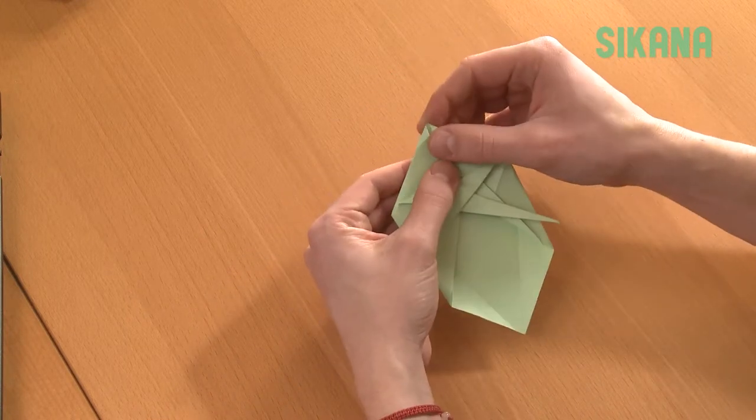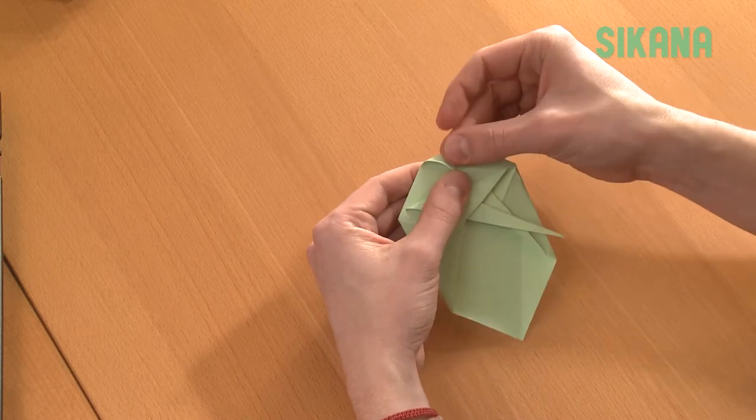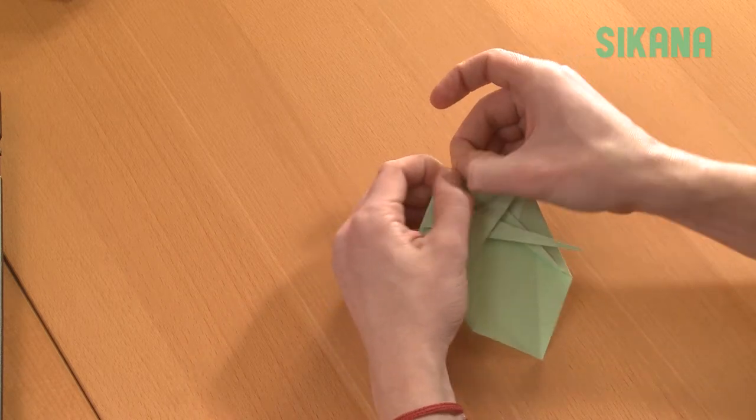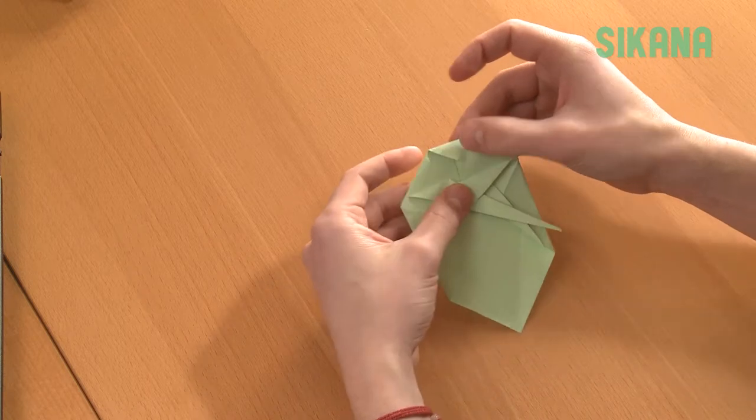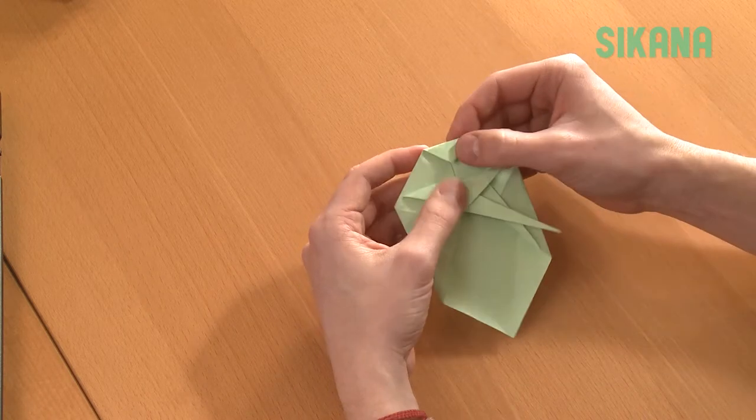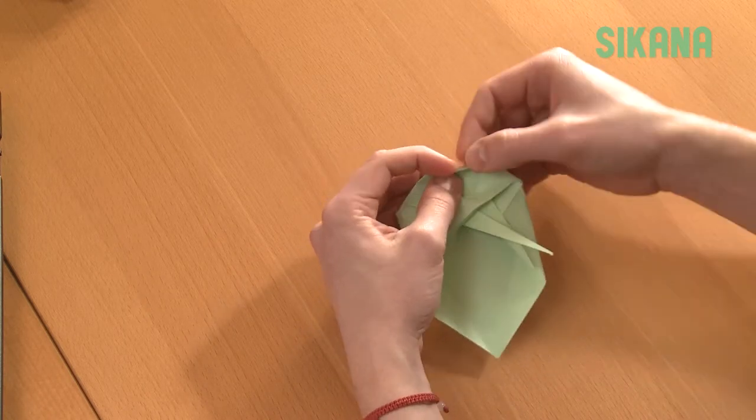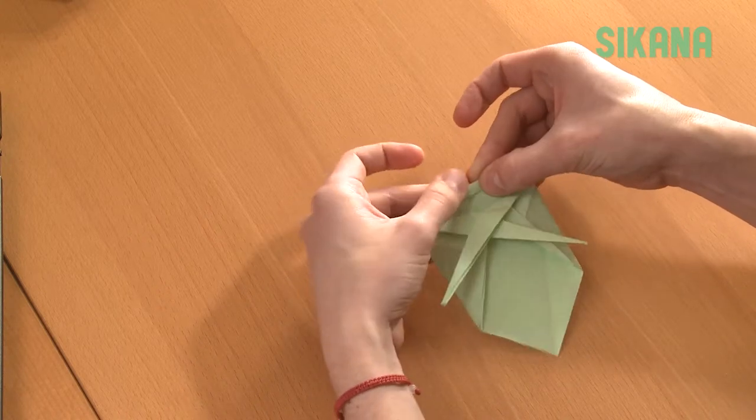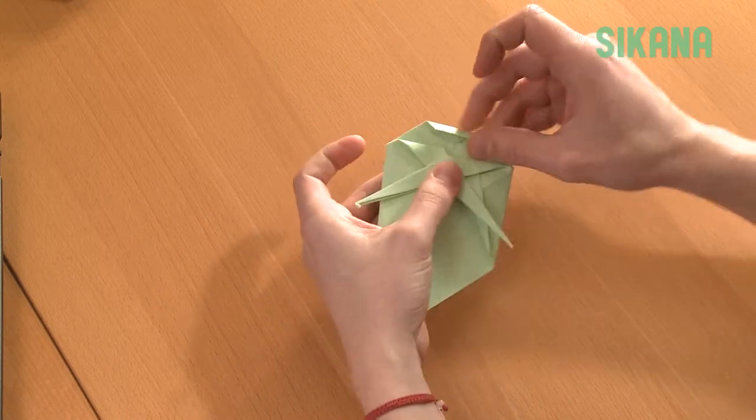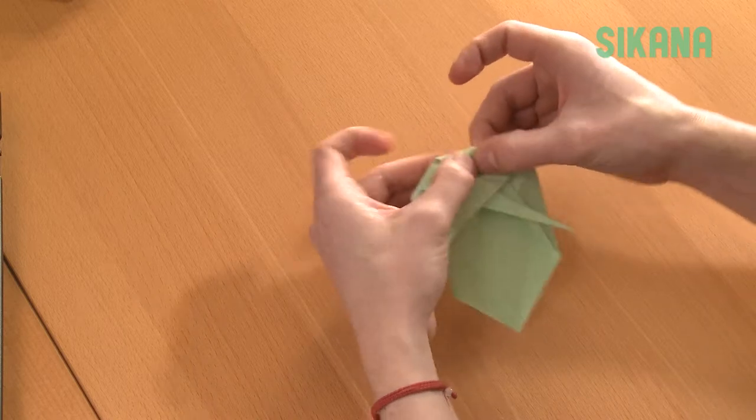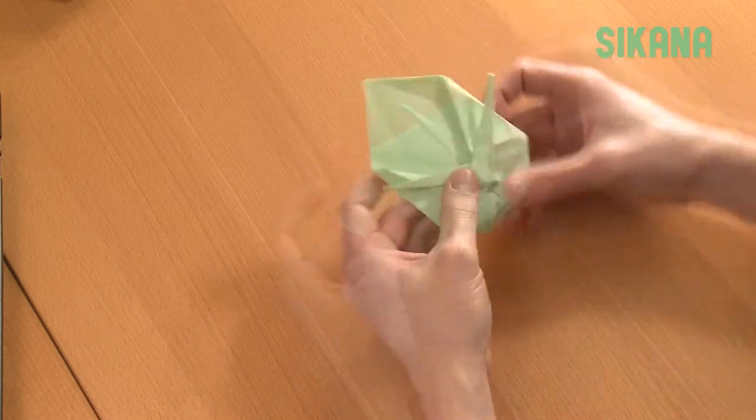Fold the top edge inward onto the center line. Fold the rest of the edge over top of the small point. Then, fold this point to this level.